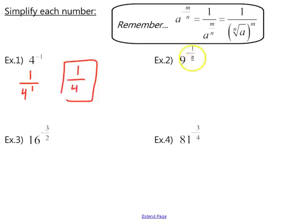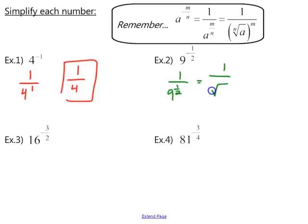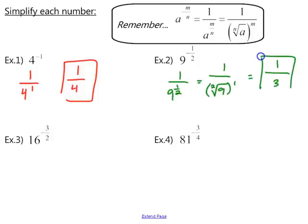In example 2 we follow the same steps. First make the exponent positive by bringing it underneath the fraction: 9 to the positive one half. Then convert into radical notation — 9 goes underneath the radical with an index of 2, all raised to the power of 1. The square root of 9 is 3, and 3 raised to the first power is just 3, so our simplified answer is one third.